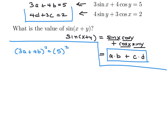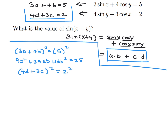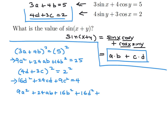Squaring 4d + 3c = 2 gives 16d² + 24cd + 9c² = 4. Adding the two squared equations together: 9a² + 24ab + 16b² + 16d² + 24cd + 9c² = 29.